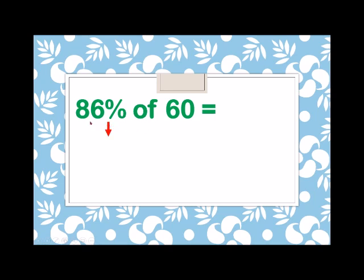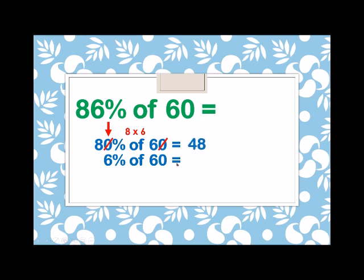Next, another example. What is the 86% of 60? Again, dividing 86% into two parts: 80% of 60 and 6% of 60. Canceling the zero from 80% and the zero from 60, we have 8 times 6. 8 times 6 is equals to 48.